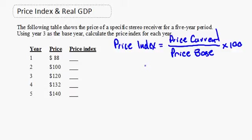Let's look at a couple of examples. First, let's calculate a price index. The price index is the current price divided by the base year price, times 100.